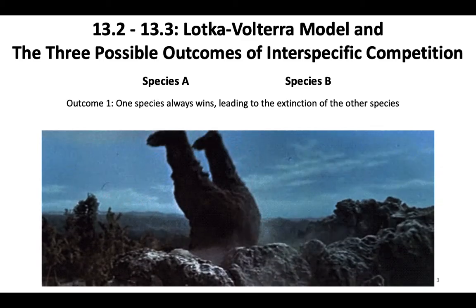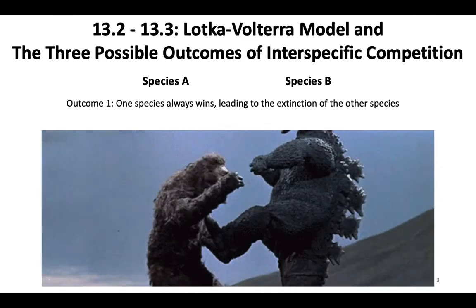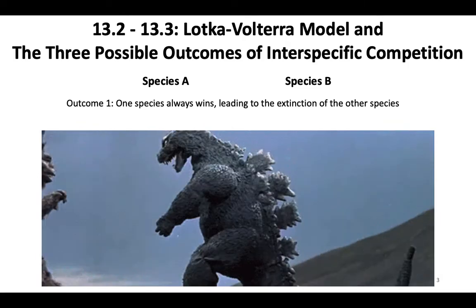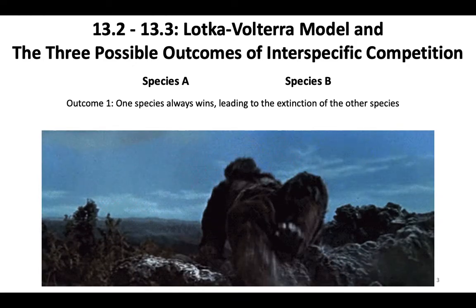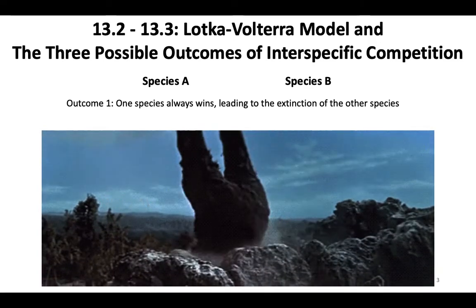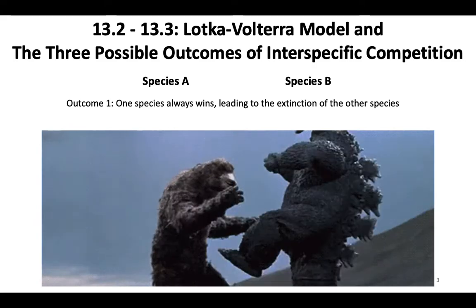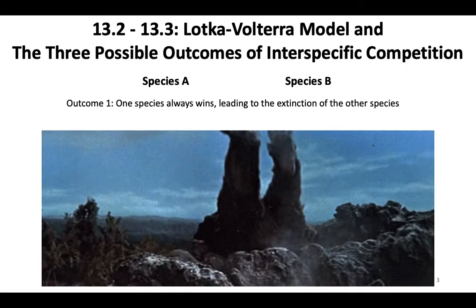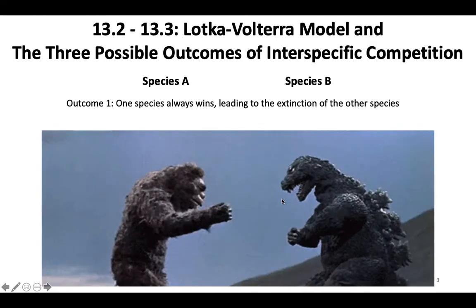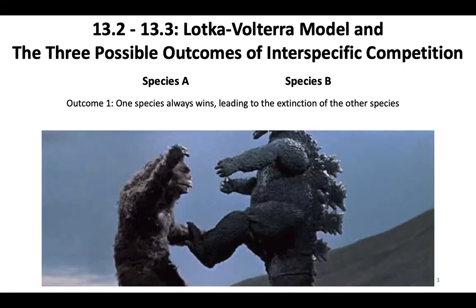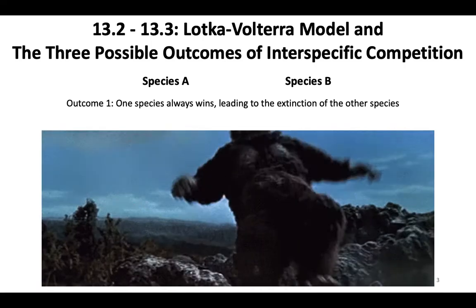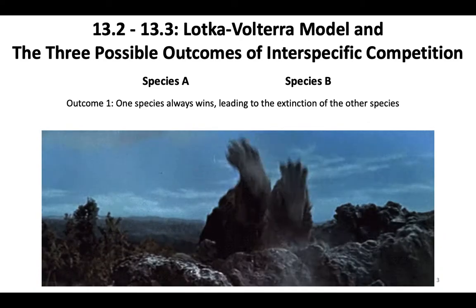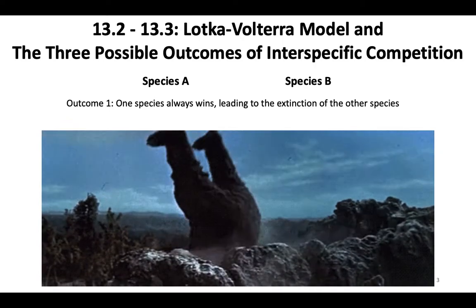Now let's talk about the Lotka-Volterra model. Your textbook goes into graduate-level detail, and I don't expect you to know nearly that much. But I do want you to know the three possible outcomes of interspecific competition from this model, because these outcomes are essentially the alternative hypotheses you test when doing an ecological study of competition. Your book lists four outcomes, but outcomes one and two are basically the same, so we'll collapse them into three.